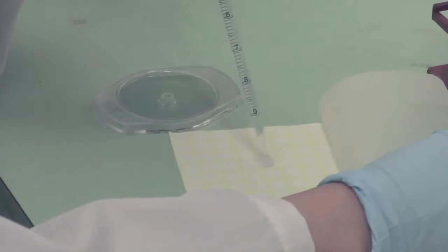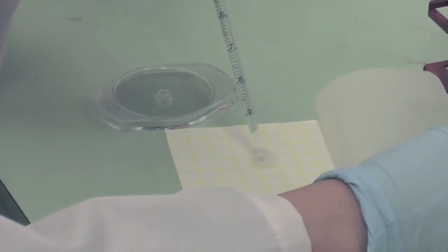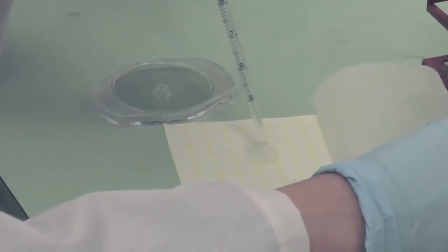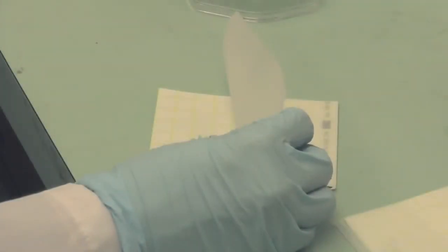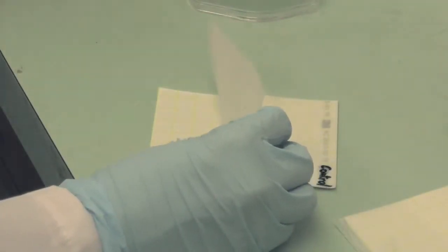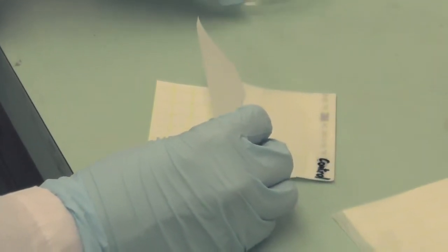Lift the top film of the petri film count plate. Dispense the inoculum onto the center of the bottom film. Release the top film onto the inoculum, taking care to avoid trapping air bubbles between the two films.